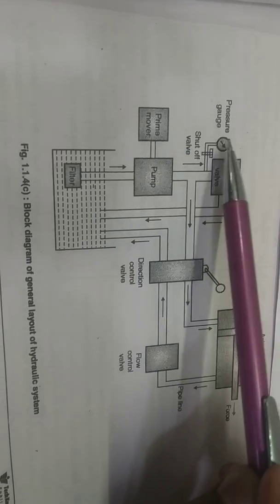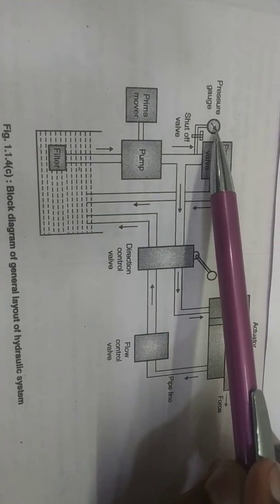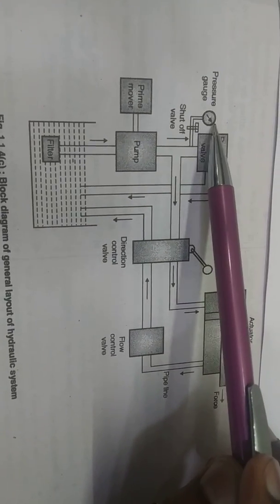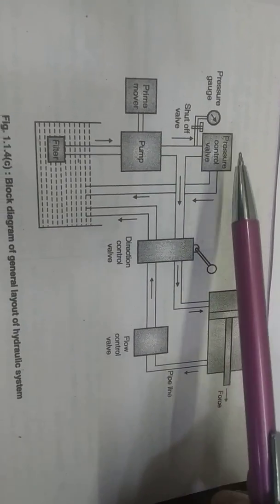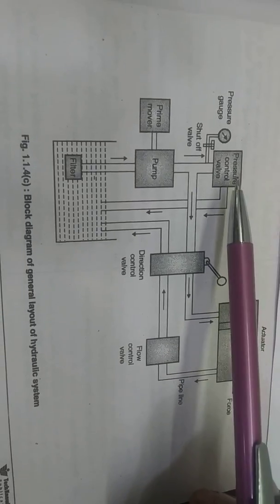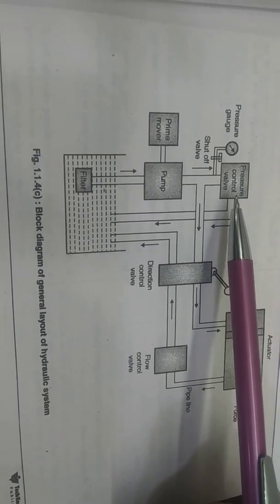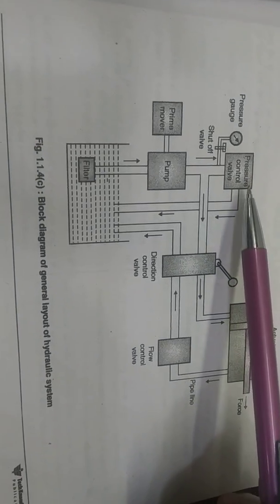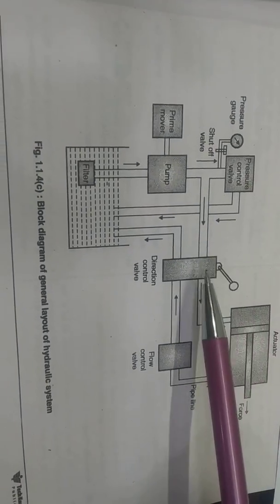The next component is the pressure gauge, which indicates or shows how much pressure of the oil is developed inside the circuit.